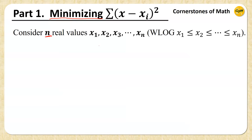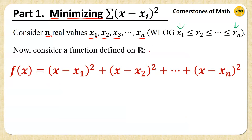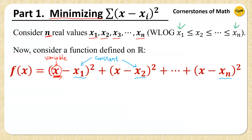Consider n real number values x₁, x₂, x₃, and so on up to xₙ. Without loss of generality, we can assume that x₁ is the least among them and xₙ is the greatest. Next, consider a function defined on the set of real numbers: f(x) = (x − x₁)² + (x − x₂)² + ⋯ + (x − xₙ)². In this function, x₁, x₂, x₃, …, xₙ are all constants with fixed values, and only x (with no subscript) is a variable.